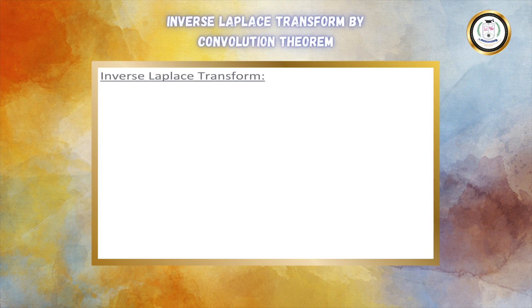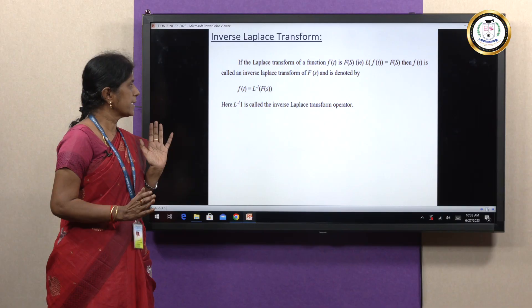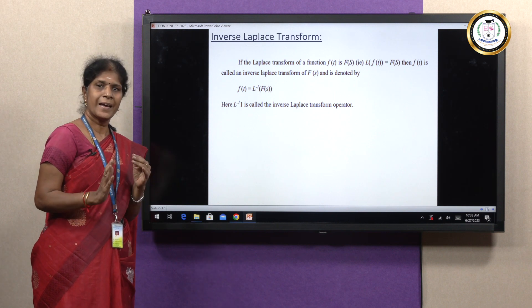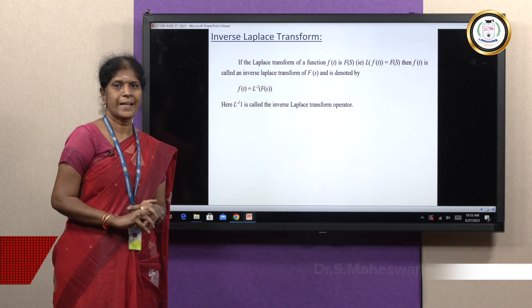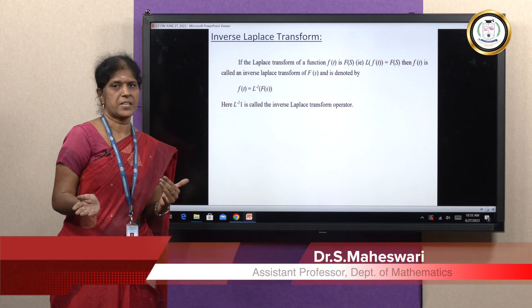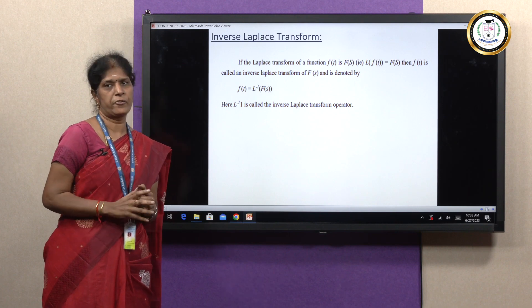First, we have to define the inverse Laplace transform. What is the inverse Laplace transform? If the Laplace transform of f(t) is F(s) — that is, L{f(t)} = F(s) — then f(t) is called the inverse Laplace transform of F(s), denoted f(t) = L⁻¹{F(s)}. Here, L⁻¹ is called the inverse Laplace transform operator. Laplace transform takes f(t) into F(s); inverse Laplace transform takes F(s) back into f(t).